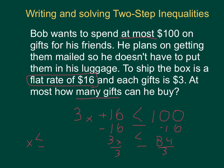That's going to be 84 divided by 3, I believe, is 28. So he can get up to 28 gifts for his friends, but not any more than that. Okay, let's try one more.